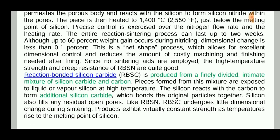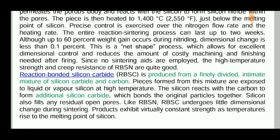Reaction bonded silicon carbide is produced from a finely divided mixture of silicon carbide and carbon. Pieces formed from the mixture are exposed to liquid or vapor silicon at high temperature. The silicon reacts with the carbon to form additional silicon carbide, which bonds the original particles together. Silicon also fills any residual open pores.